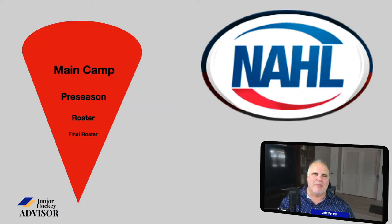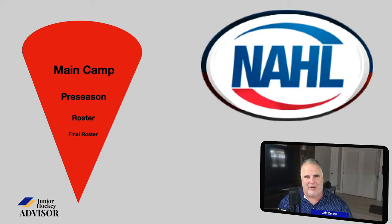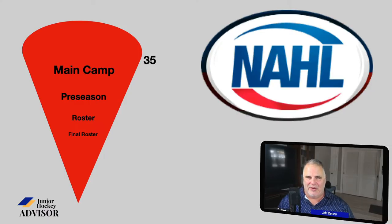What is the main camp and what is the purpose of a main camp? A main camp is where a team invites a bunch of different players in, including the returners, their free agents, their draft picks, the affiliates, and their tenders — and they have a showcase of talent. Coming out of main camp there are 35 protected players, and only 35.